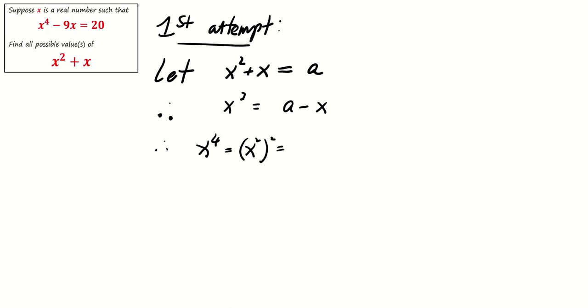Square on both sides, we get x^4 = a^2 - 2ax + x^2. Since x^2 = a - x, we may substitute into this expression. And finally, we get x^4 = a^2 - 2ax + a - x.